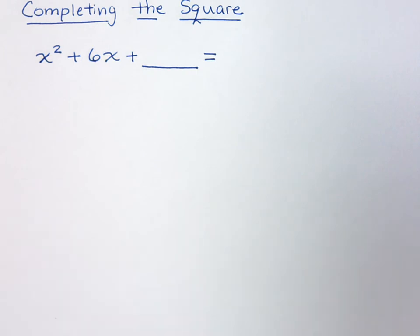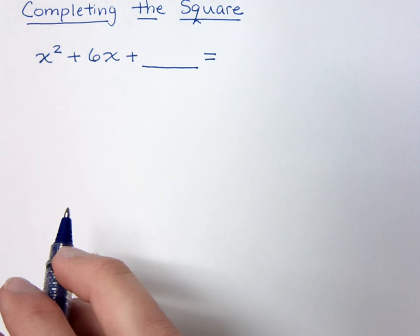Combining completing the square with the square root property that we've seen in some other examples will allow us to develop this fantastic formula called the quadratic formula that will help us solve any quadratic equation. But let's first start with completing the square because there's some great things we can get from completing the square.